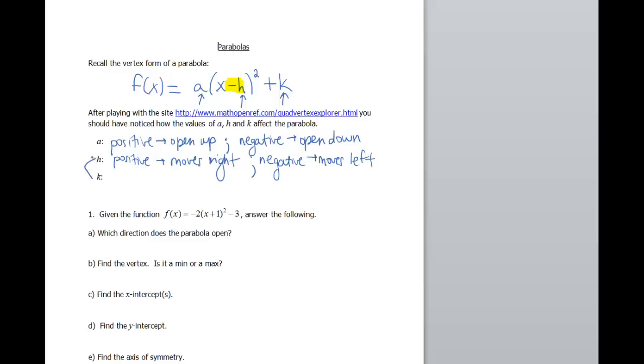And h and k, so h is the x value of your vertex, k is the y value of your vertex. Now k, because it's on the outside of these parentheses here, k moves like you would think it would. So if k is positive, it's gonna move it up. And if k is negative, it's gonna move it down.